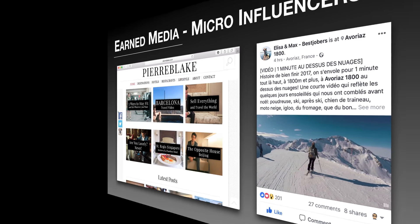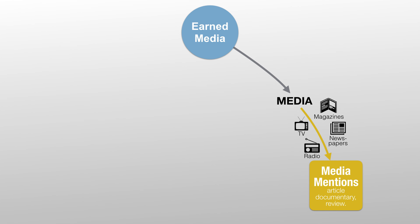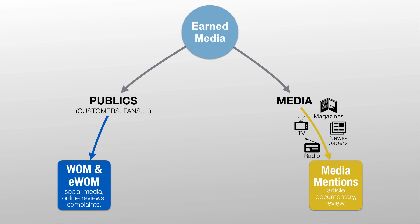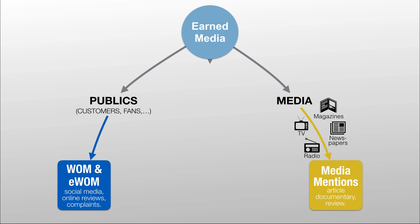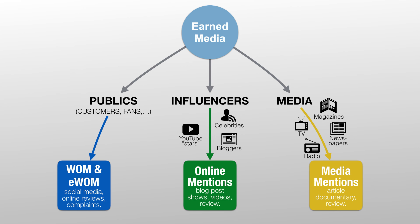To summarize, earned media can be created in three different ways. First, through traditional media like newspapers, radio, TV, and magazines, in the form of articles, documentaries, and reviews. Second, through the general public — customers and fans — as they share their experience online via social media posts and reviews. Third, through influencers and micro-influencers, who share their experience through social media posts, blogs, and reviews. The reach of this type of earned media is bigger, as their number of followers is much larger than that of regular consumers.